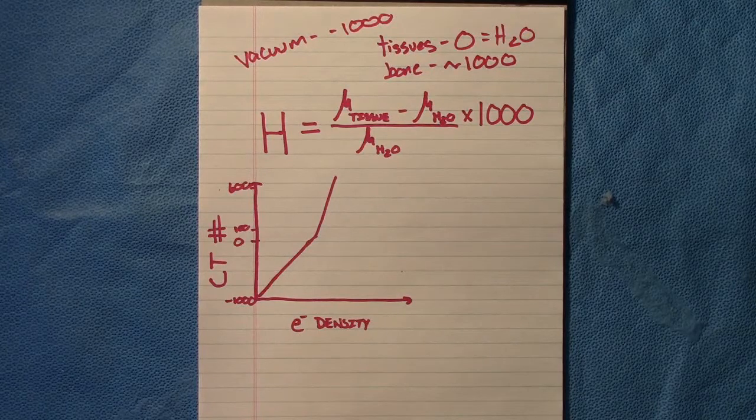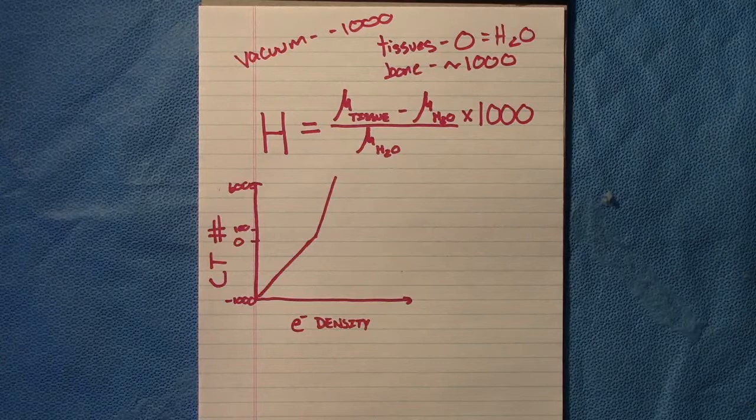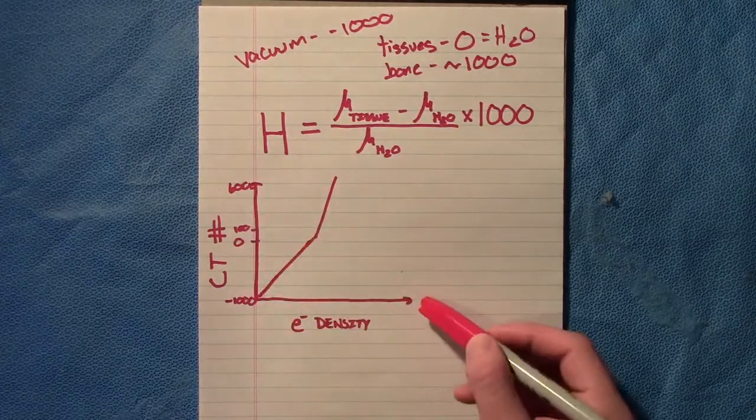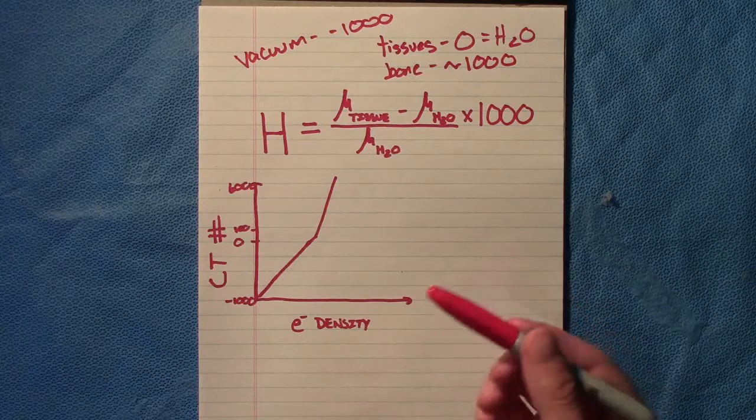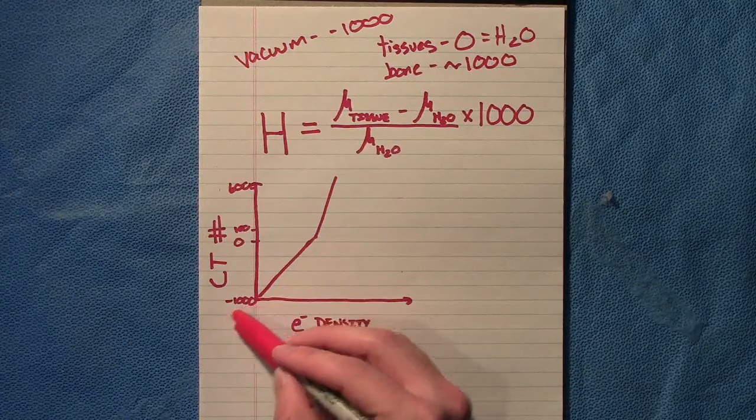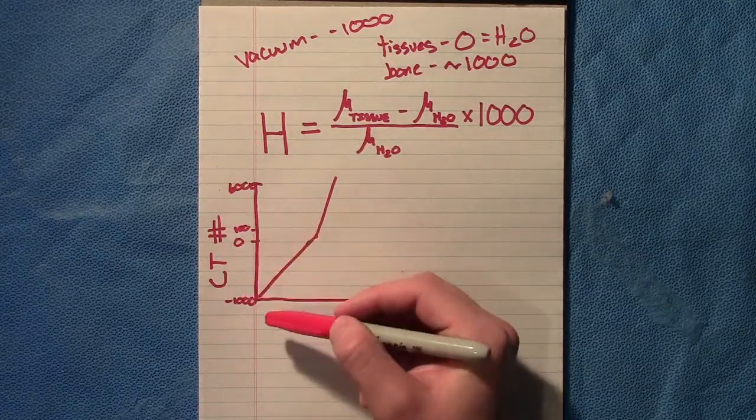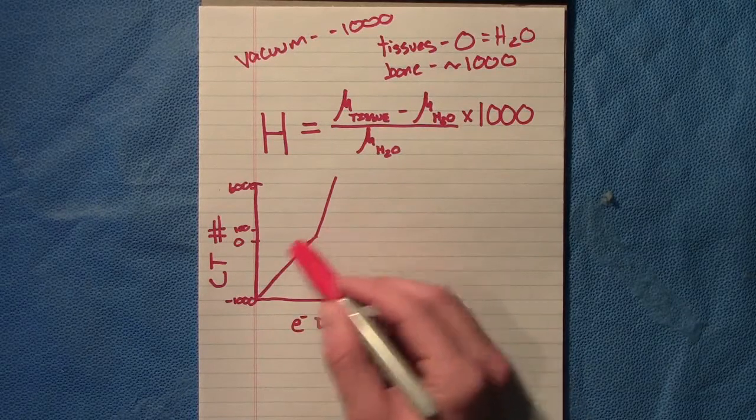For the most part, our CT numbers and our electron densities are linear. So this is a rough sketch of an electron density curve, but the one in your clinic is going to look very similar. From negative one thousand over here on the y-axis, we have CT number from negative one thousand to around zero, maybe one hundred, we're going to have a linear curve.